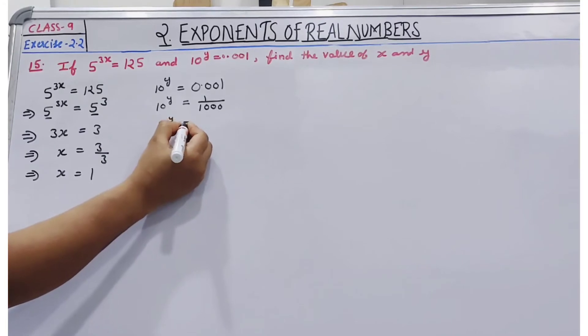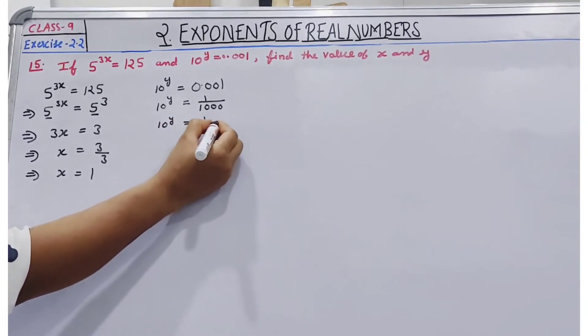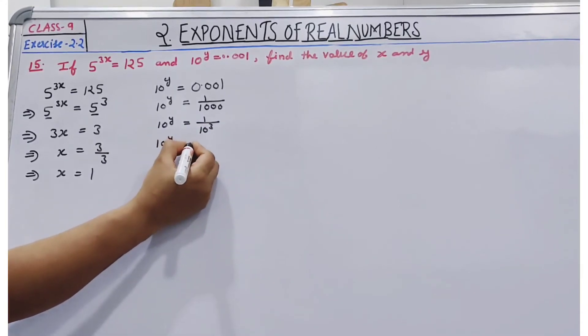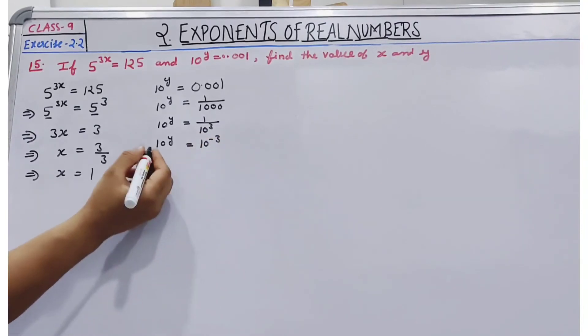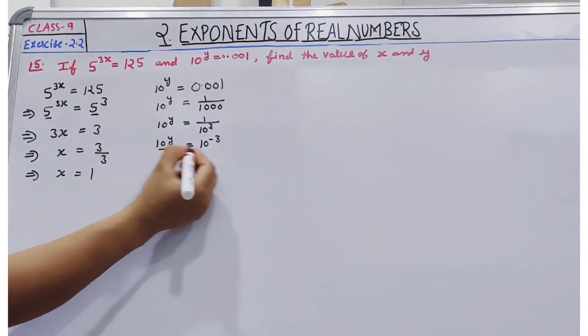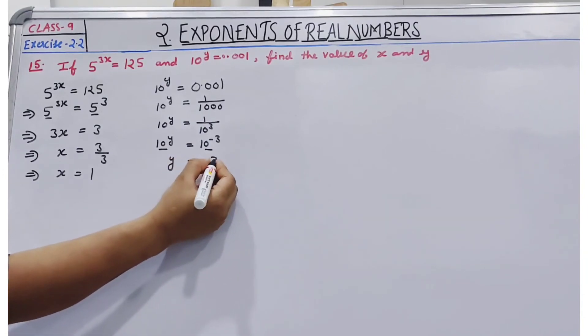So 10 to the power y is equal to 1 divided by, how can we write 1000? 10 to the power 3. So 10 to the power y is equal to, if we take it to the denominator, this becomes 10 to the power minus 3. Now our base is the same, so we can equate the powers. So y is equal to minus 3.